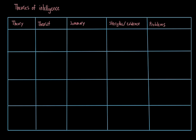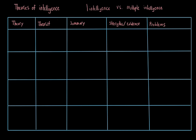There are a number of different theories about what intelligence is and how to define it. But before I get into that, I want to talk about a debate that pervades all of these different theories — the question of whether there's one general intelligence, whether intelligence has multiple aspects, or whether there are multiple intelligences. As we go through these theories, keep that debate in mind and think about where each theorist stands.